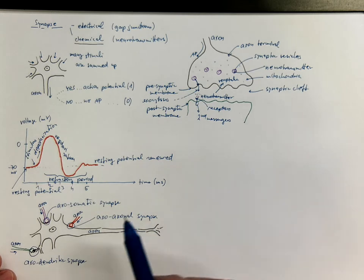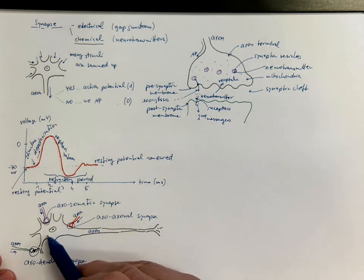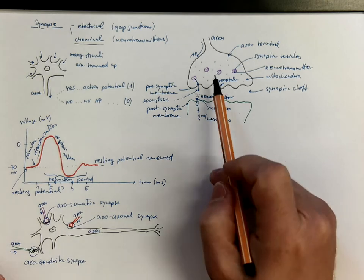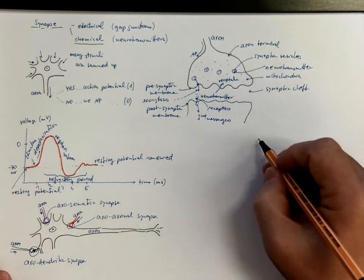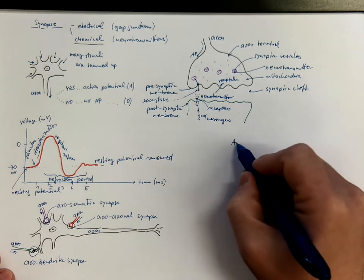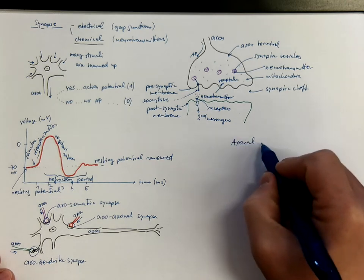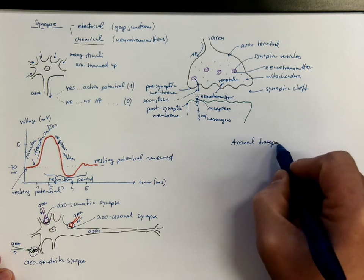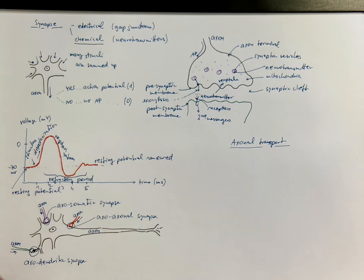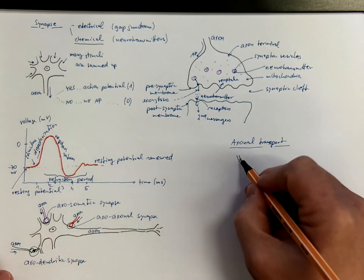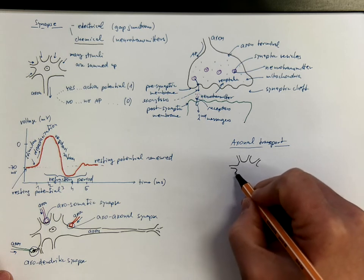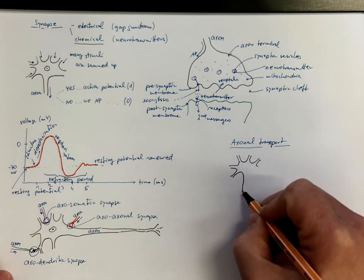Now we know that the cell body is the metabolic center of a neuron, while neurotransmitters are located in the periphery. This requires a phenomenon called axonal transport, which is the exchange of metabolites between the cell body and the periphery of the processes.